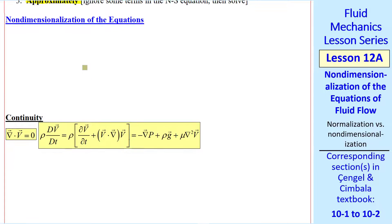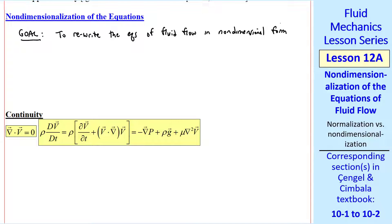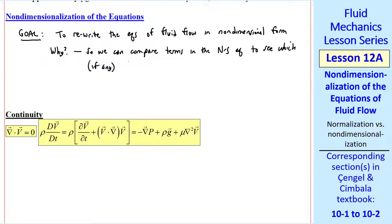The first step is to non-dimensionalize the equations. Our goal is to rewrite the equations of fluid flow in non-dimensional form. Why? So we can compare terms in the Navier-Stokes equation to see which of them, if any, are negligibly small compared to other terms. This is properly done by non-dimensionalizing the equations — in fact, we'll normalize the equations, and I'll explain the difference between these two later.